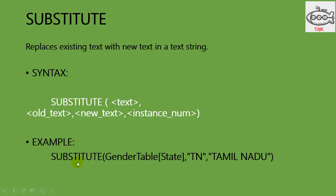The example is SUBSTITUTE on the gender table's state column, where it will find the text 'TN' and replace it with 'Tamil Nadu'.